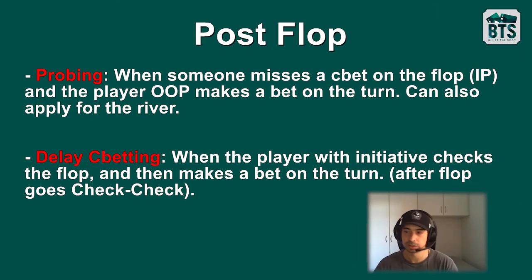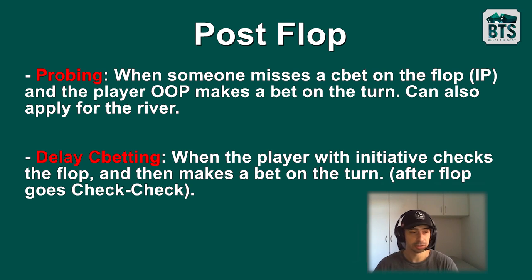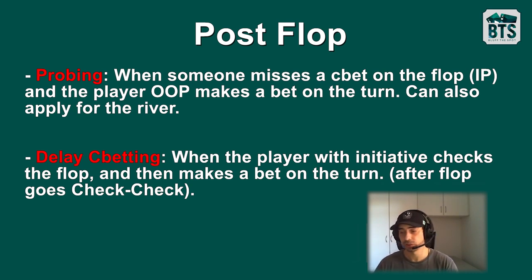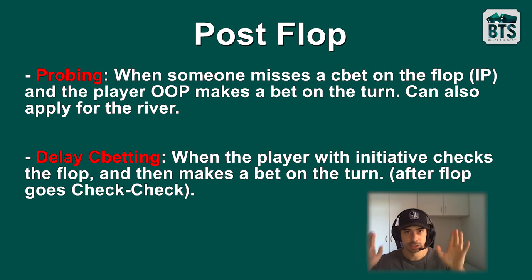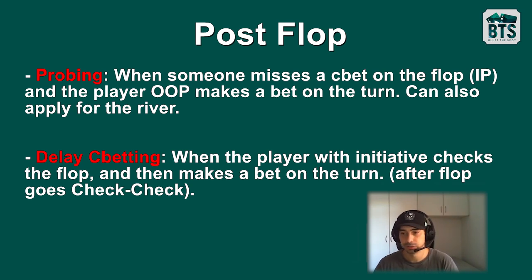Then there's probing — a name that might differ between trackers. Poker Tracker has it as 'probe,' but Hold'em Manager might not even have this stat, or you may need to create a custom stat for it. Probing is basically when someone misses a c-bet on the flop being in position, and the player out of position makes the bet on the turn. For example: player one opens the button, you as the big blind call, flop goes check-check, and now you have the opportunity to lead the turn — that's called a probe, or 'bet versus missed c-bet out of position' in Hold'em Manager. It also applies for the river: if he c-bets the flop, you call, turn goes check-check, and then you have the opportunity to probe the river.